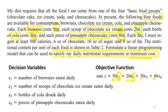I define x1 as the number of brownies eaten daily. Remember you have to be very specific in the definition of the decision variables — you must say 'the number of brownies eaten daily.' Similarly, x2 is the number of scoops of chocolate ice cream eaten daily. The definition is super specific: it doesn't say only 'cola' but rather 'bottles of cola drunk daily.' Keep in mind that you need to define decision variables as specifically as possible.